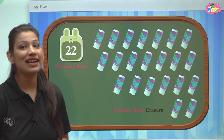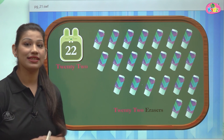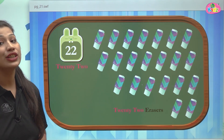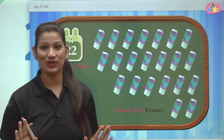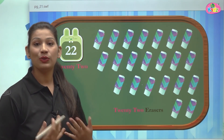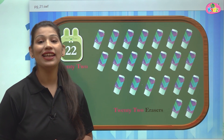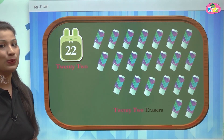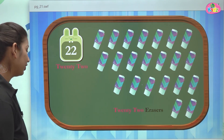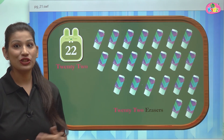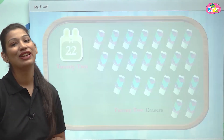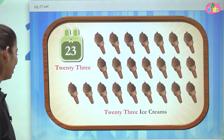22 — these are 22 erasers. 22 is also very easy to write: you just have to write 20 and 2. The spelling of 20 you all know — T-W-E-N-T-Y, and then T-W-O for 2, giving 22. After 22, which number comes? It's 23.